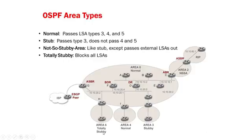Lastly, a totally stubby area — maybe it's a home office or small office where all they need to know is: for whatever you're trying to reach, go to the backbone. A totally stubby area doesn't pass any LSAs except for a summary default gateway. So the default gateway is the only kind of LSA you're going to get in that area. It just says, no matter what you're trying to do, go to the backbone and let the backbone routers deal with it.